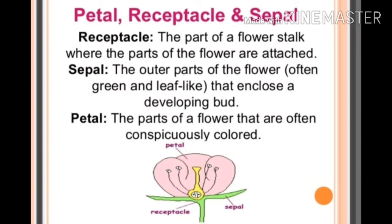In the picture you can see the petal, receptacle, and sepal. The receptacle is the part of the flower stalk where the parts of the flower — sepal, petal, stamen, and pistil — are attached. That part is called the receptacle.